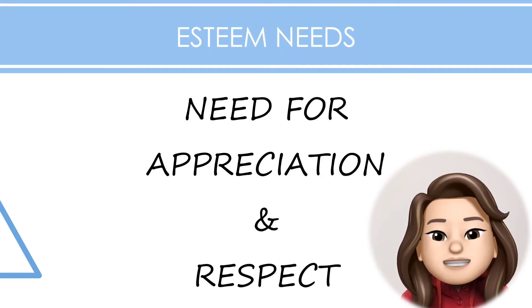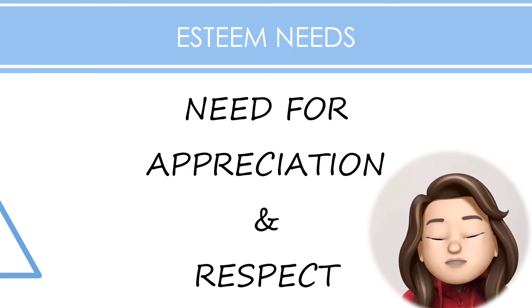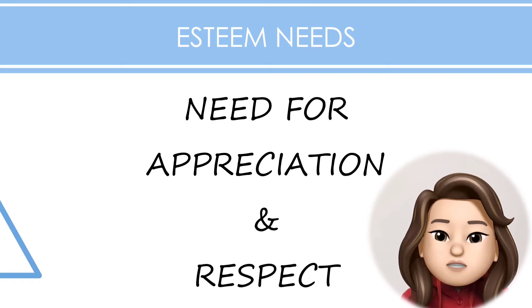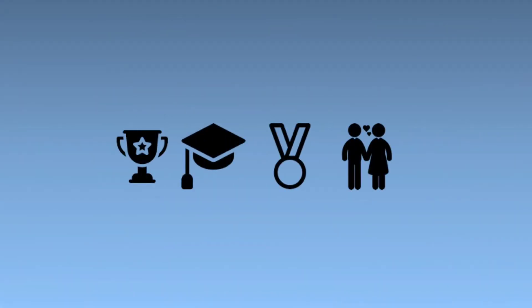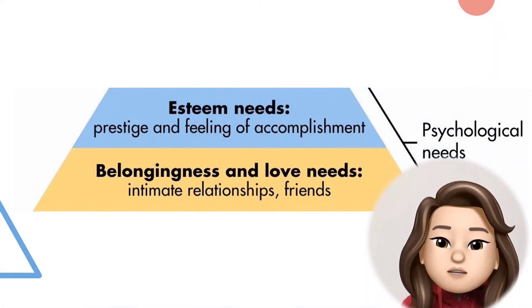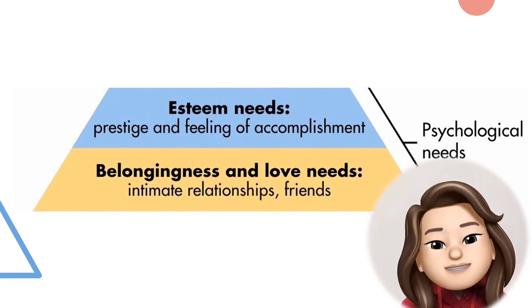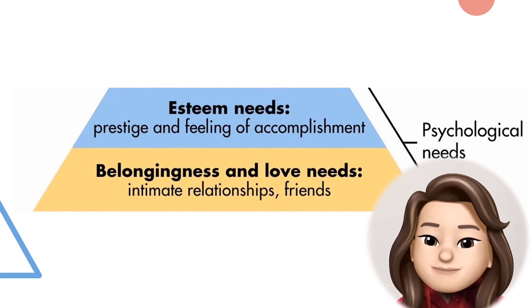At the fourth level in Maslow's hierarchy is the need for appreciation and respect. When the needs at the bottom three levels have been satisfied, the esteem needs begin to play a more prominent role in motivating behavior. At this point, it becomes increasingly important to gain the respect and appreciation of others. People have a need to accomplish things and then have their efforts recognized. In addition to feelings of accomplishment and prestige, esteem needs include self-esteem and personal worth. Together, the esteem and social levels make up what is known as the psychological needs of the hierarchy.